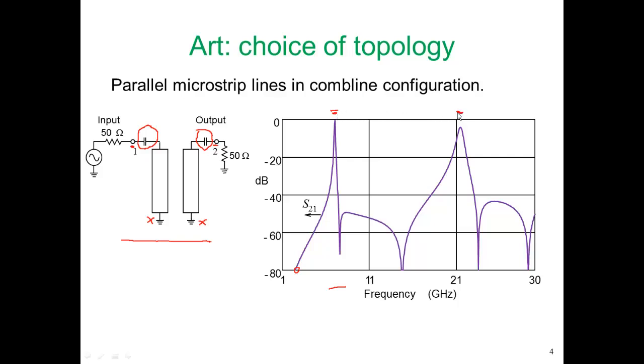As with all transmission line structures, we will experience spurious passbands. And this passband is around about three times the frequency of our main passband, and we can manipulate where that occurs from time to time, and we'll talk a little bit about that when we get closer to the end of our design.